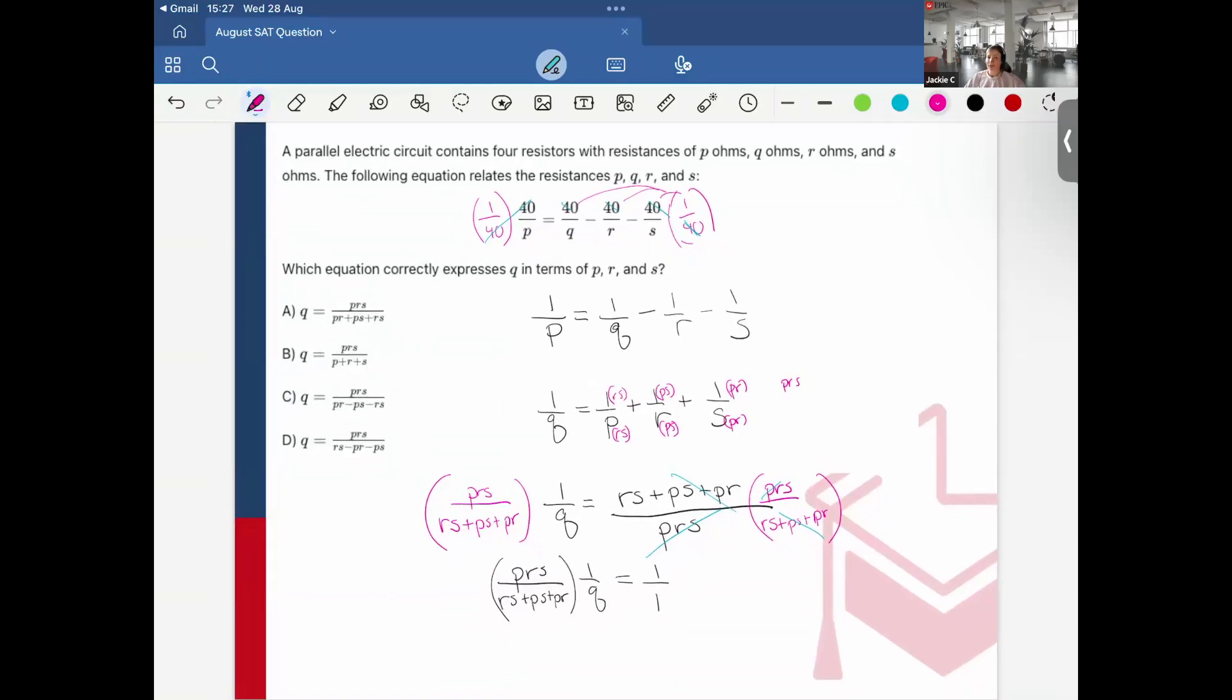And then the final step, since I want everything in terms of Q, I'm now going to multiply everything by Q, each side of the equation by Q. So let's do that, multiply this by Q and multiply this by Q. So my final equation should be Q is equal to prs over pr plus ps plus rs. And this seems to directly match with correct answer choice A. And that would be the answer.